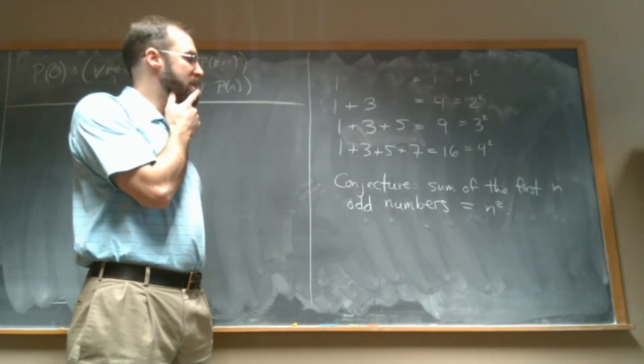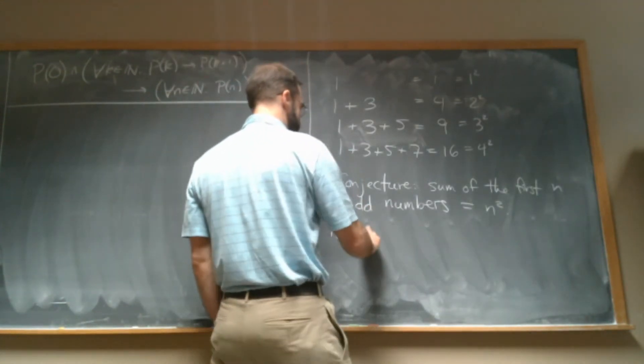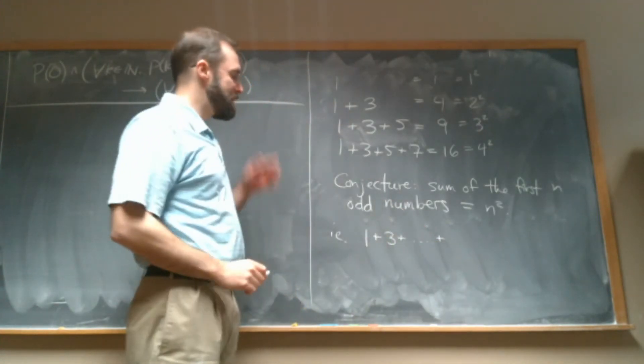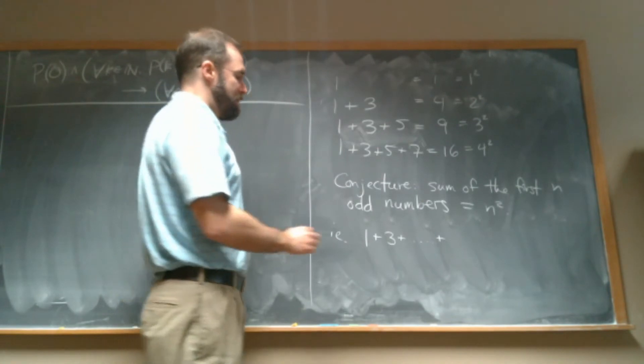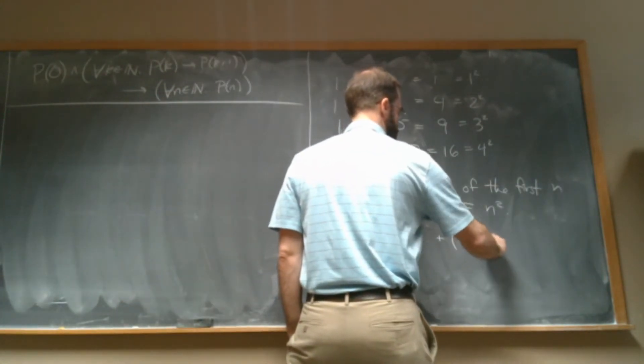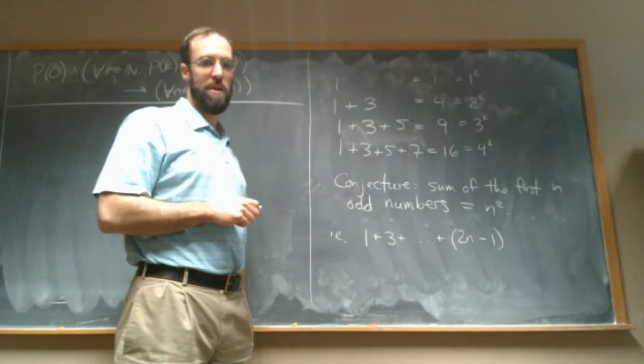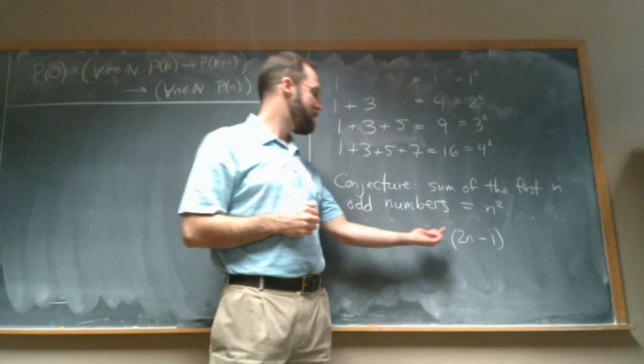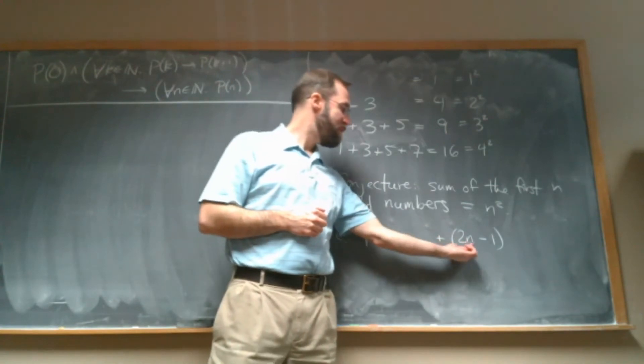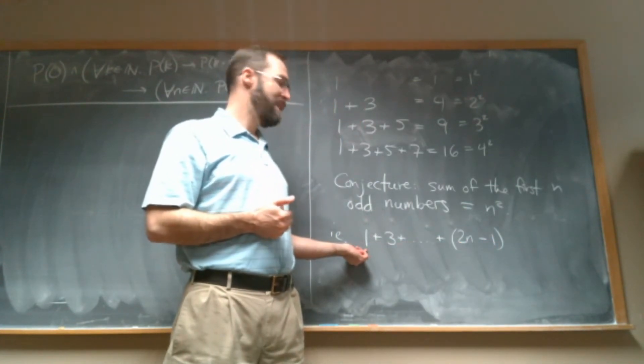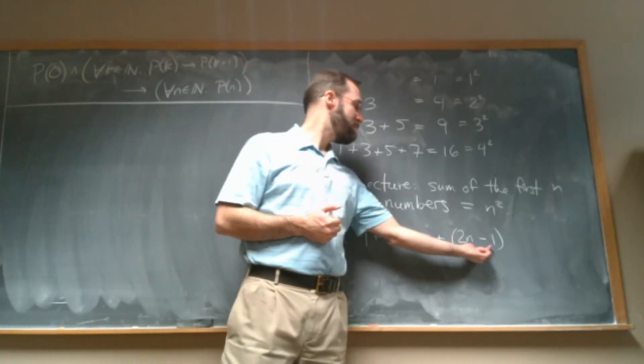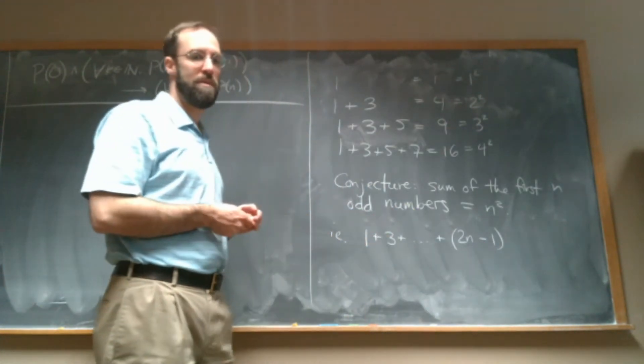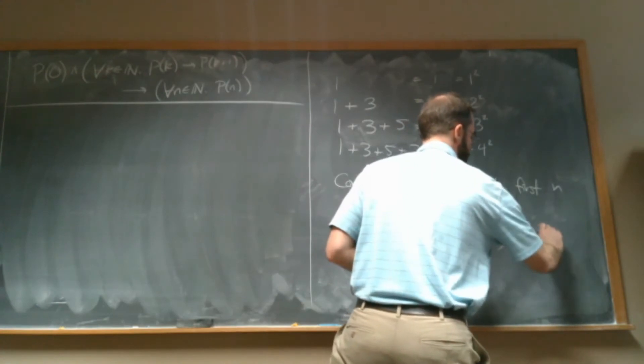Our conjecture is that the sum of the first n odd numbers equals n squared. And to write that a little more formally, we could say that is 1 plus 3 plus dot dot dot plus 2n minus 1. So an odd number is always 1 more or less than an even number, right? And we can check that this is doing the right thing. So if n is 1, then this is going to be 2 minus 1, which is 1. If n is 2, we're going to get 4 minus 1, which is 3. So 2n minus 1 will be the nth odd number.